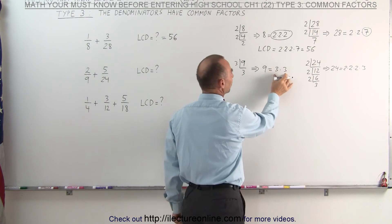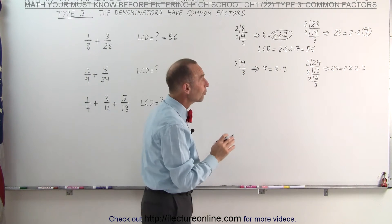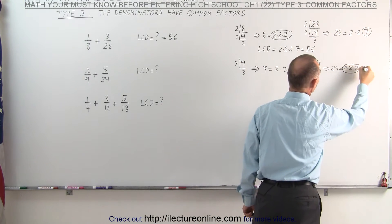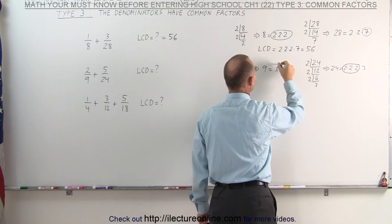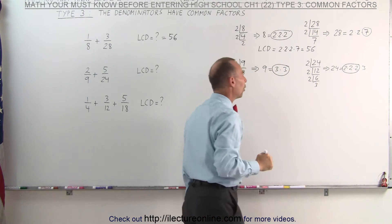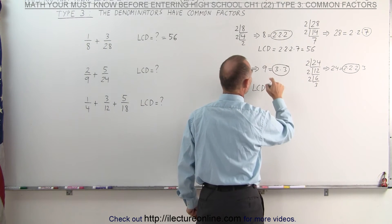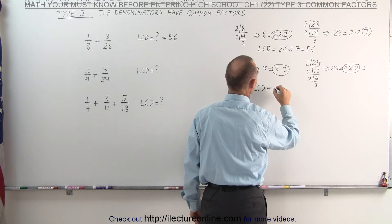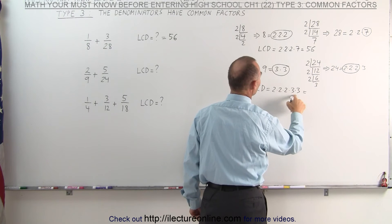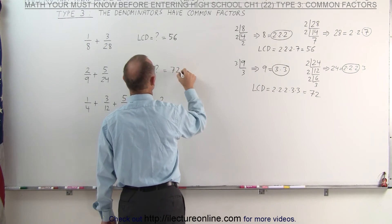Here we have 2 threes, there we have 1, and here we have 3 twos. We're going to circle all the prime factors where they occur the most. There are 3 twos here, so we'll circle these. There are 2 threes here, so we'll circle these. We don't have to circle this one because there's only 1 of them there and there are 2 of them over here. The lowest common denominator is the product of all the circled factors: 2 times 2 times 2 times 3 times 3, which is 8 times 9, or 72.